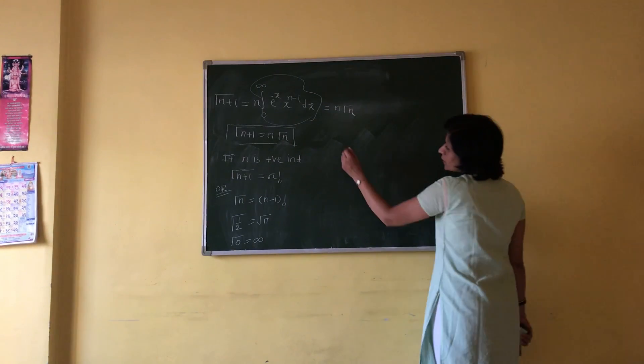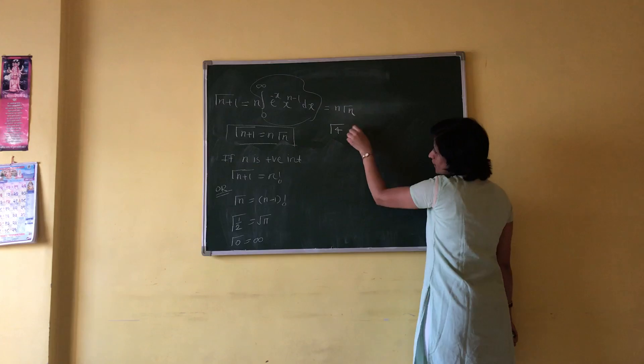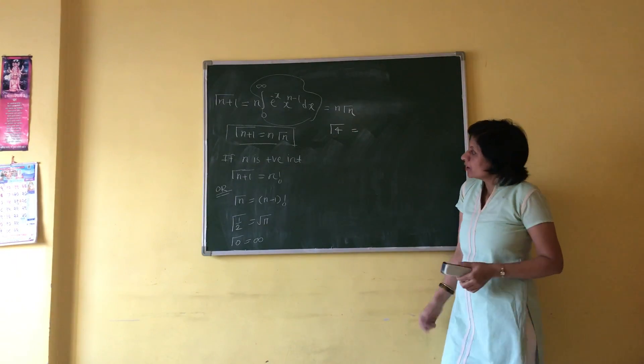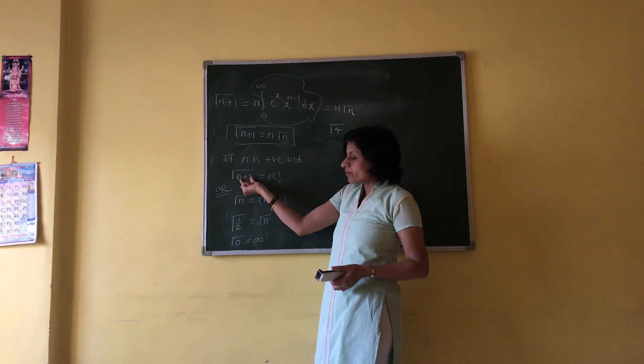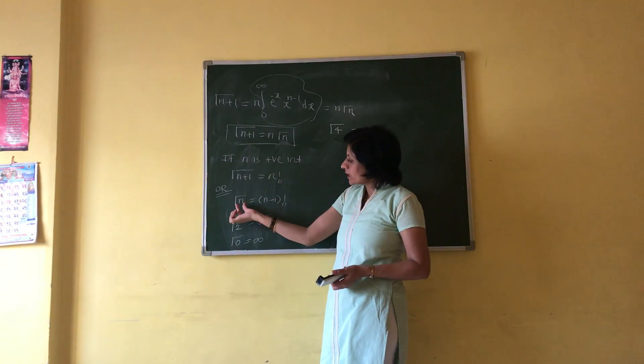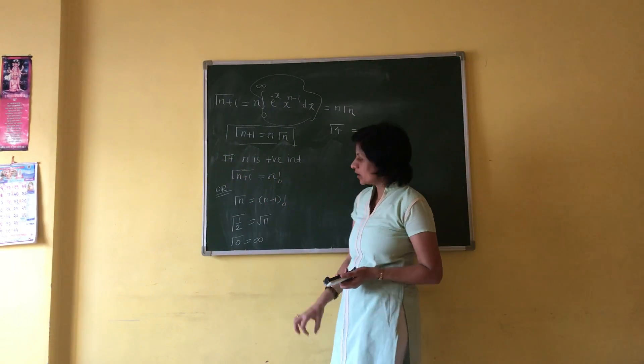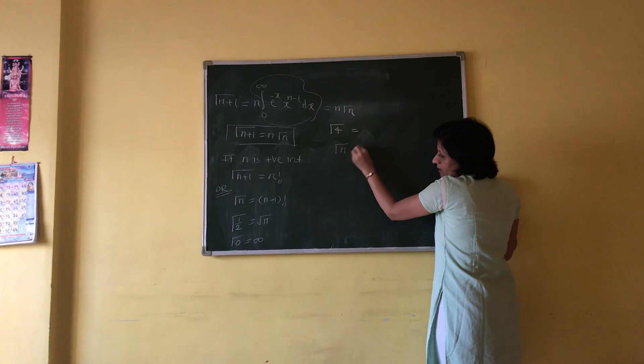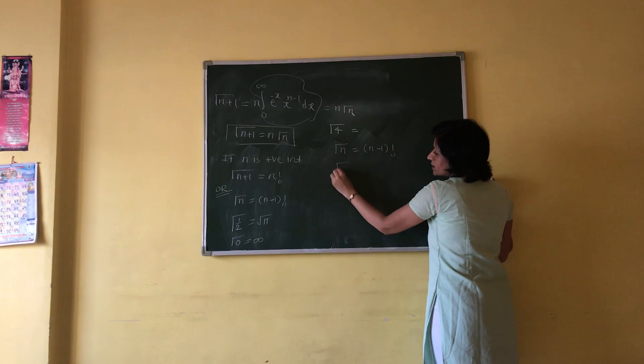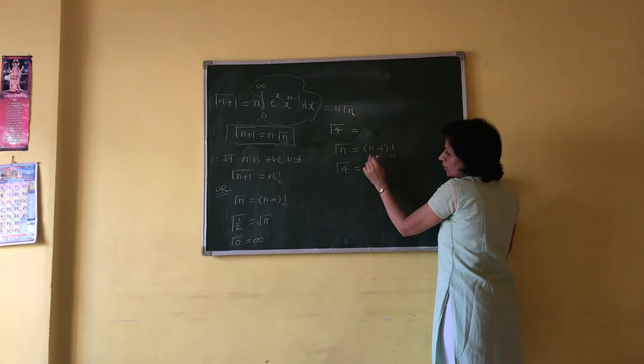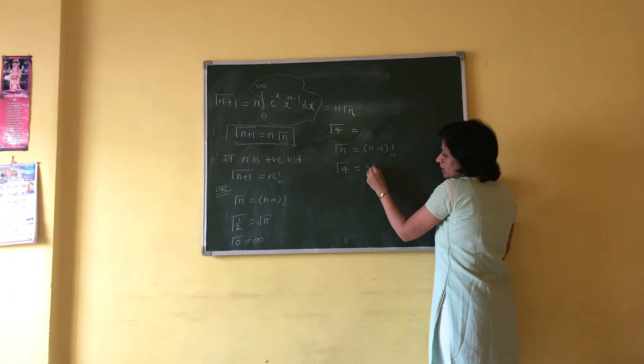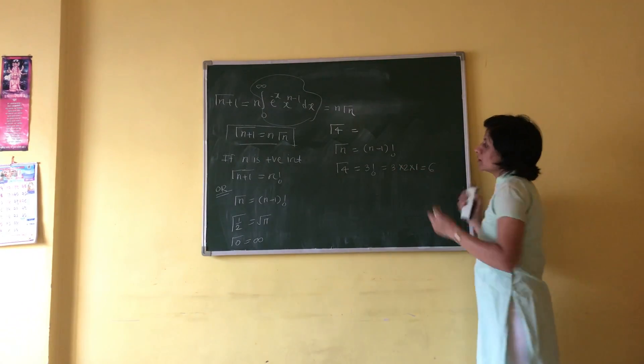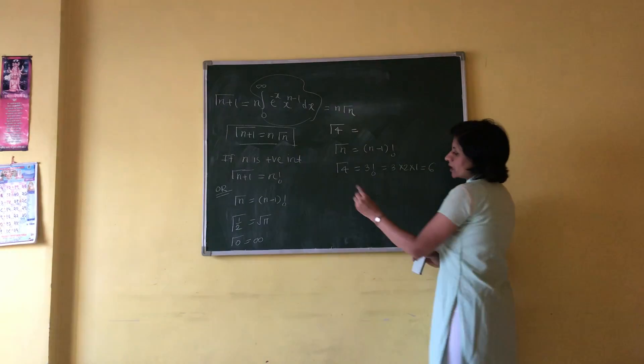For example, to solve gamma of 4, here 4 is a positive integer. Using the result gamma n equals n minus 1 factorial, we have gamma 4 equals 4 minus 1 factorial, which is 3 factorial. 3 factorial means 3 times 2 times 1, which equals 6. Therefore, the value of gamma 4 is 6.